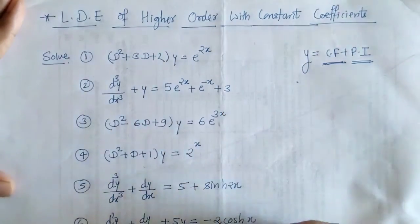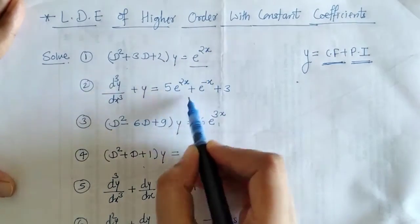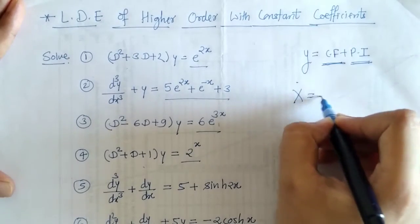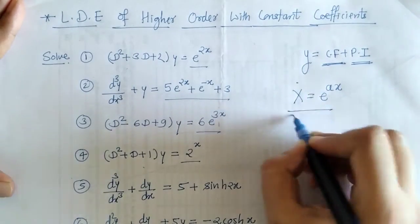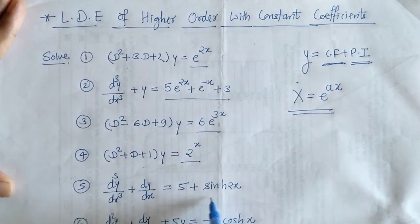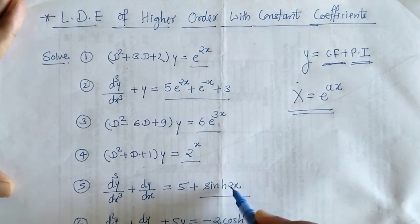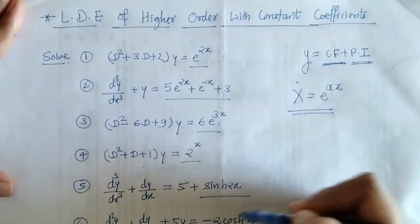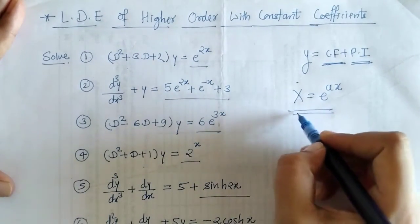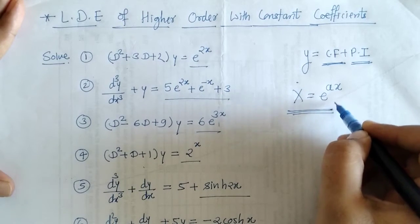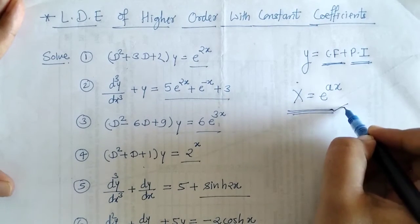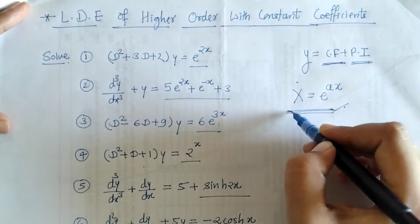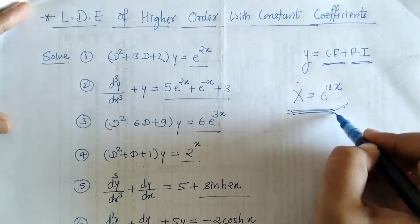We can check that the RHS of all these differential equations is of these types. Here X is equals to e raised to ax — this is the exponential form. We can also reduce hyperbolic sine and cosine into this form. So we have to discuss how to find the particular integral for such type of function. Let's proceed for finding the particular integral when X is equals to e raised to ax.